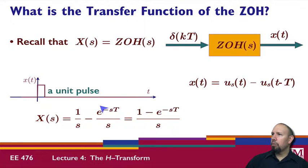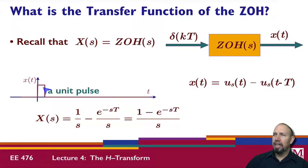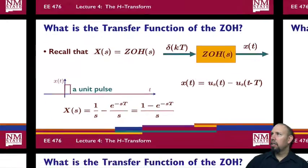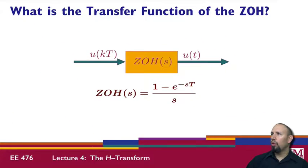The output we get is in the Laplace domain: we get a unit step where it turns on, and then the pulse turns off — it's like subtracting a time-delayed unit step function. So we can look at the zero order hold as having the transfer function: one minus e to the minus sT, divided by s.